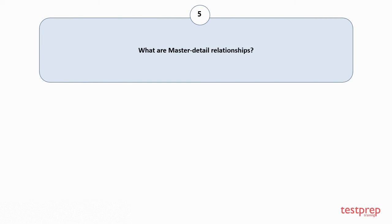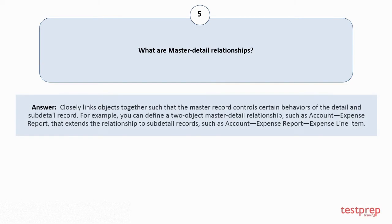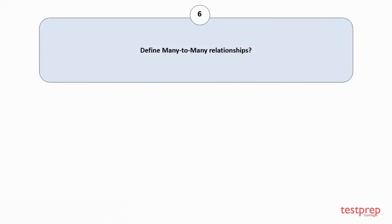Question number five: What are master-detail relationships? A master-detail relationship closely links objects together such that the master record controls certain behaviors of the detail and sub-detail record. For example, you can define a two-object master-detail relationship such as Account and Expense Report, that extends the relationship to sub-detail records such as Account, Expense Report, and Expense Line Item.